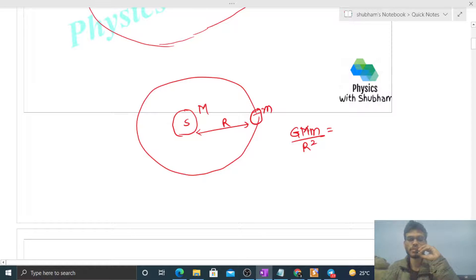That will be responsible for the circular motion. This gravitational force of attraction will provide the necessary centripetal force which is m omega square r. So here m cancels.